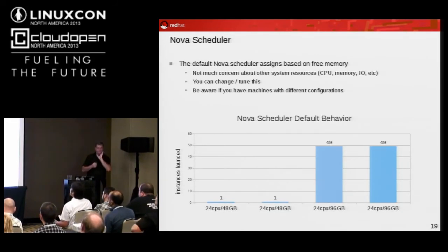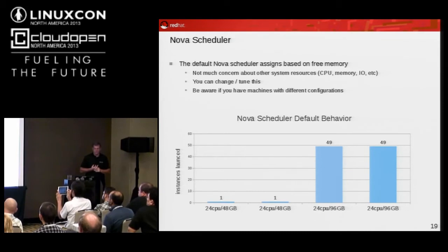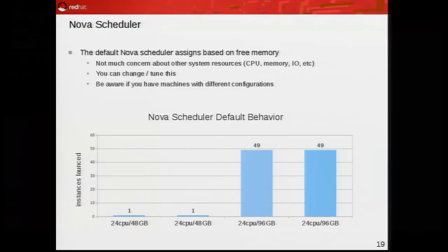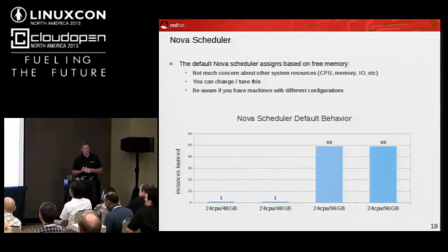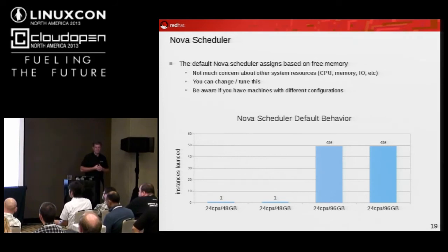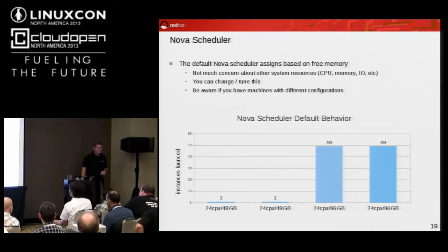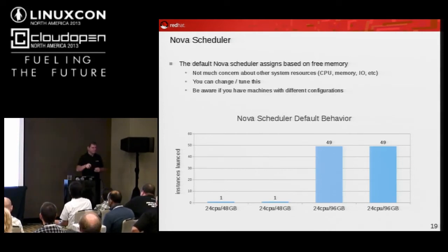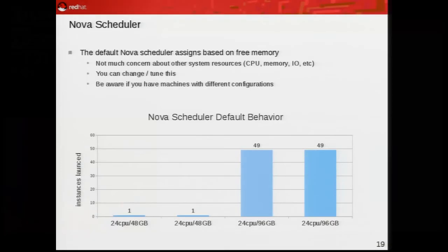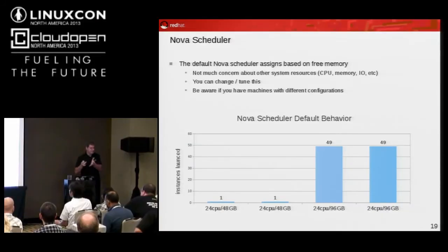As we move into the gray area between control plane and data plane, a team member just finished up some work with the Nova scheduler and it had some interesting results. Basically, the way the default Nova scheduler works is it goes based on the amount of free memory. This test was on Grizzly, using whatever the default filter scheduler was.